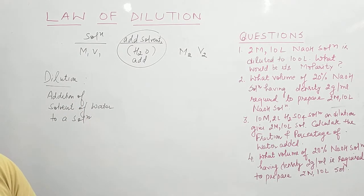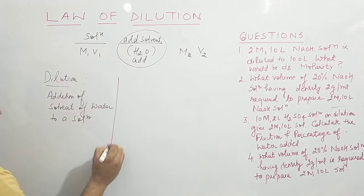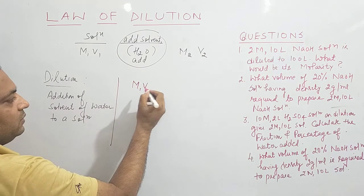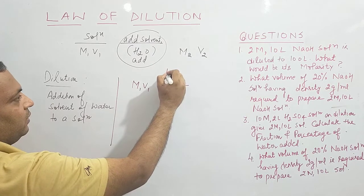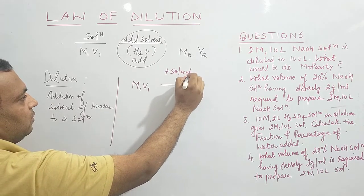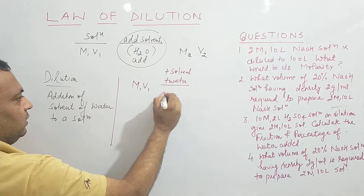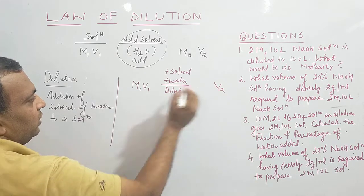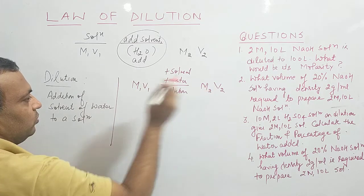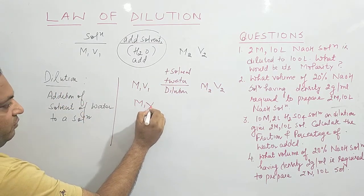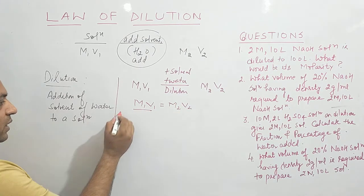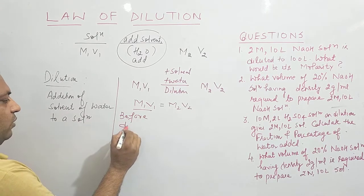After dilution, the volume changes from V1 to V2 and molarity changes from M1 to M2. The Law of Dilution states: M1V1 = M2V2, where M1 and V1 are the molarity and volume before dilution, and M2 and V2 are the molarity and volume after dilution.